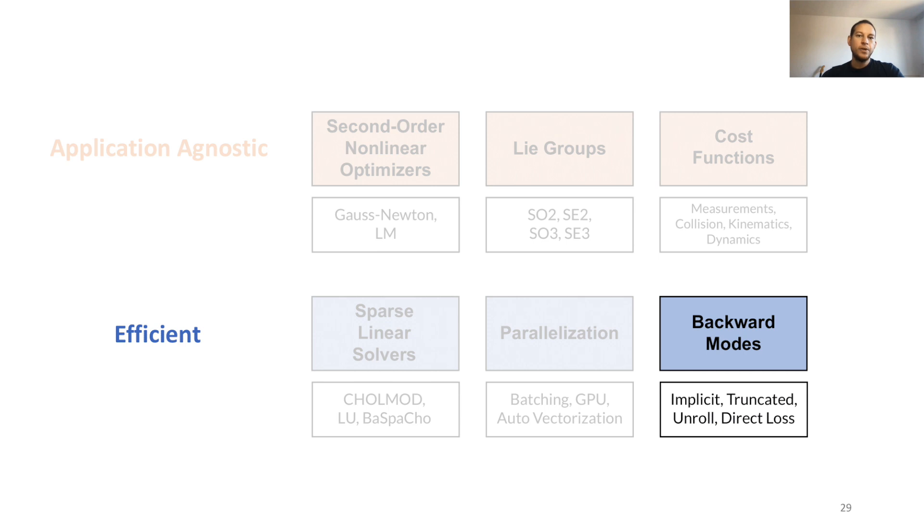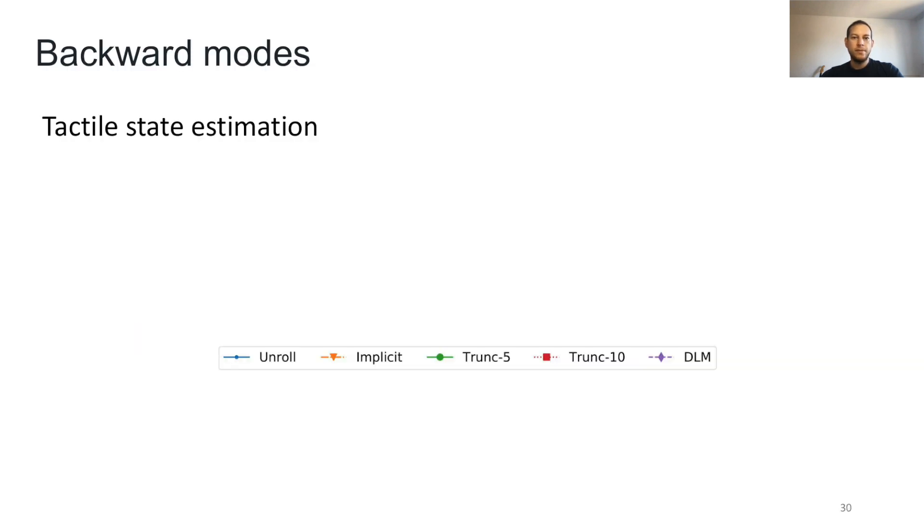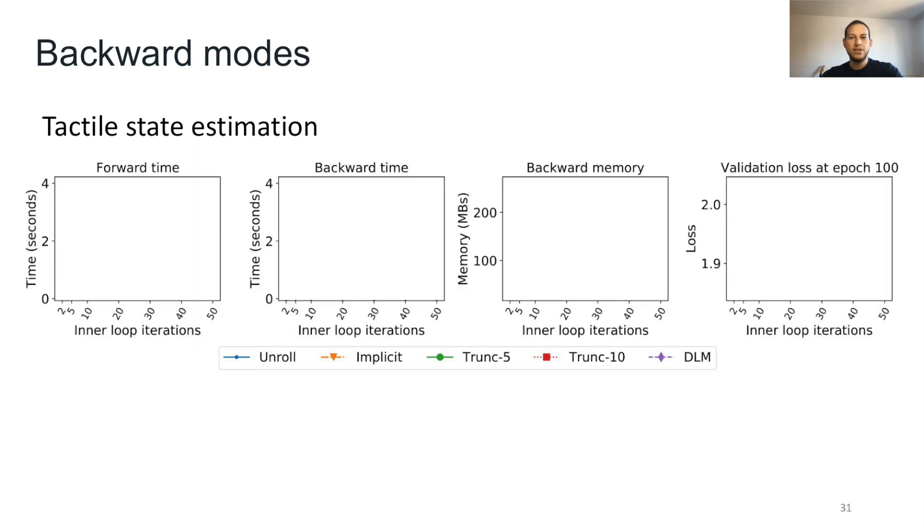Finally, we discuss support for various backward modes for end-to-end differentiation. We introduce implicit differentiation and direct loss minimization in addition to truncated backprop. These serve as alternatives to standard unrolling, a method that has challenges with compute memory and vanishing gradients.